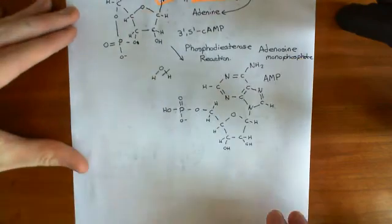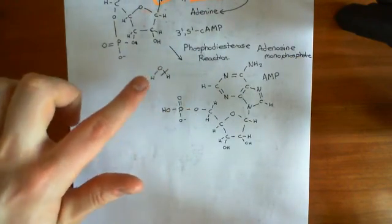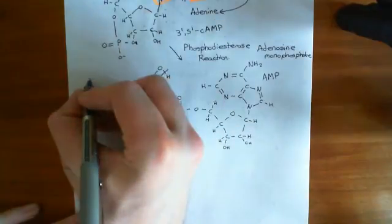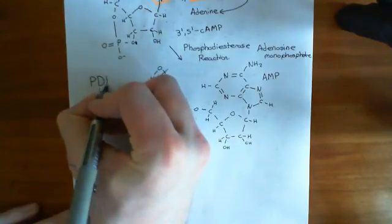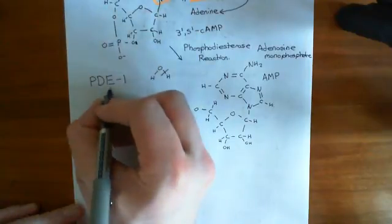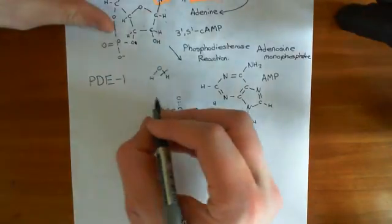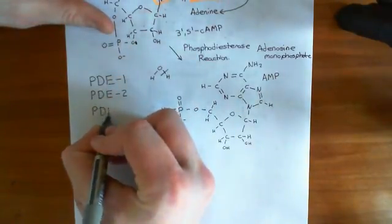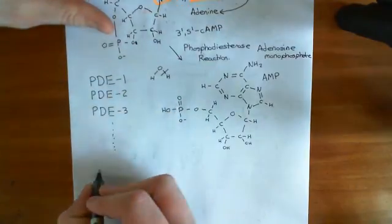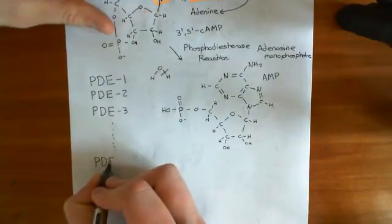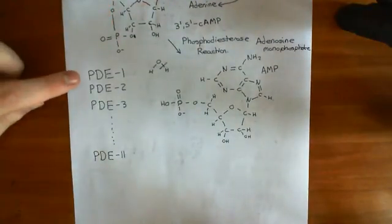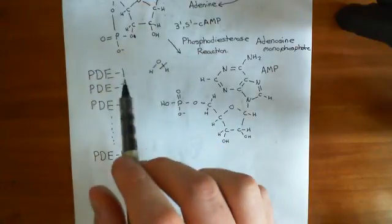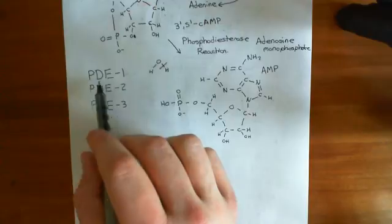There are many enzymes which can catalyze this phosphodiesterase reaction, and they're grouped into 11 families. So you have the family phosphodiesterase 1 — PDE stands for phosphodiesterase — then phosphodiesterase 2, phosphodiesterase 3, and continuing all the way down to phosphodiesterase 11. Now, these are not single enzymes. Phosphodiesterase 1 is a whole family of enzymes — not a single gene coding for a single protein, but a bunch of genes which all code for phosphodiesterases similar enough to be placed in a single family.